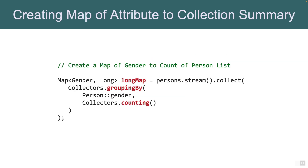We can also do summarization of the collection. For example, if I don't want the list of persons or names but rather the count of people — for each gender, what is the number of people — I want a map of gender to Long representing the count. In that case we use Collectors.counting(). We first group by gender and then within the group use Collectors.counting() as the second parameter, which counts the number of persons and returns the count.